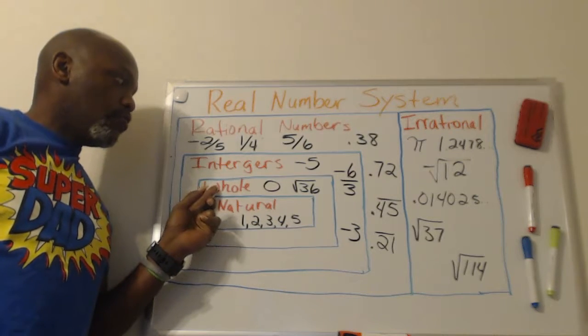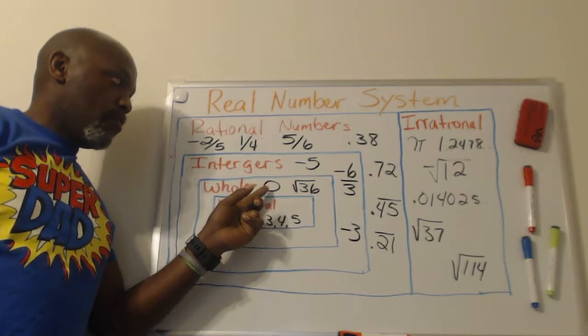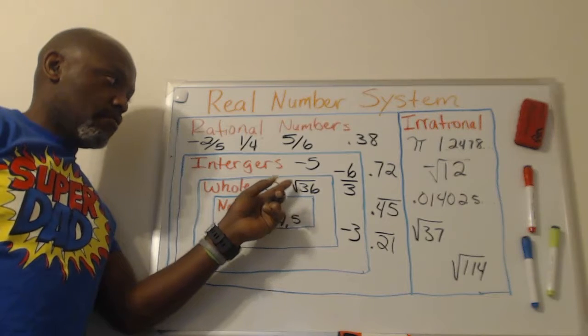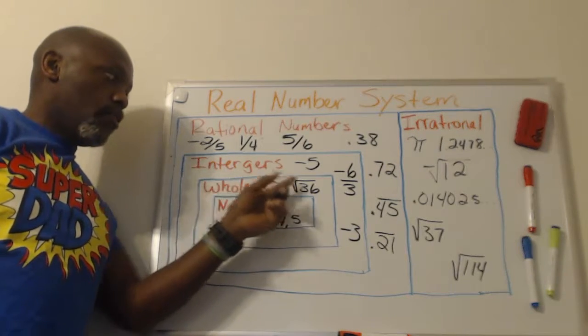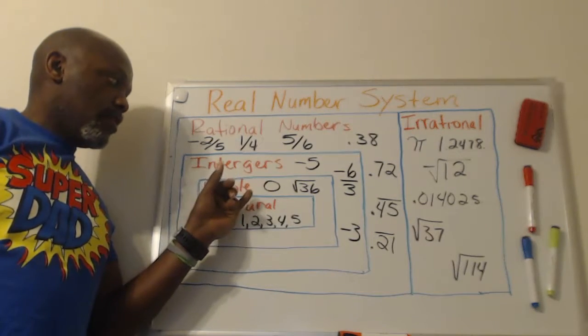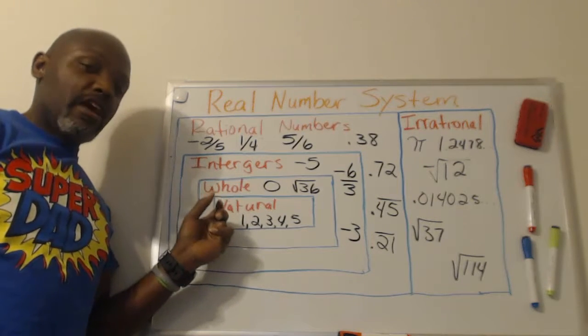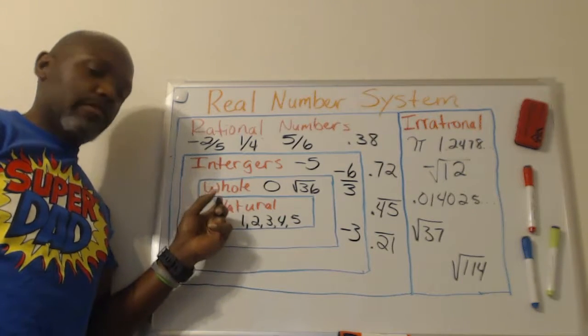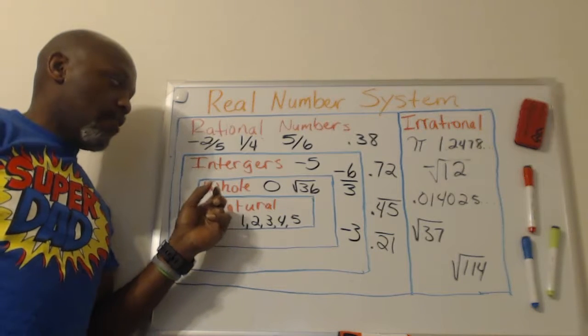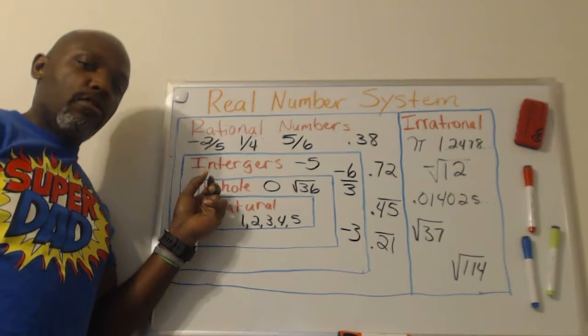Once you get to whole numbers, 0 and square root of 36, which would be 6, are both whole numbers. So I also want you to understand that a whole number is not a natural number because the whole number is not in the natural box. However, the natural number is also a whole number.